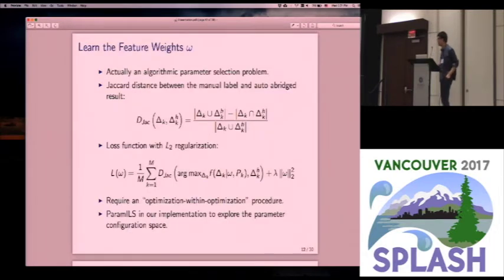These are the details about our learning procedure. Actually, in the last graph, the missing part is how we evaluate the distance between those two truncated programs. We use the Jaccard distance in our implementation. It's a very popular measurement to measure the difference between two sets. So the overall loss function is defined as the average Jaccard distance over all the samples in our training set. To prevent overfitting, we also have the L2 regularization terms.